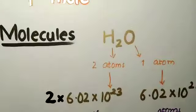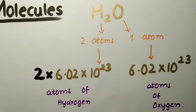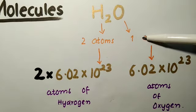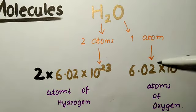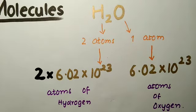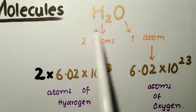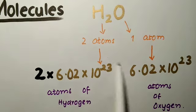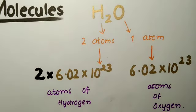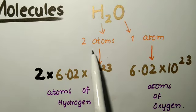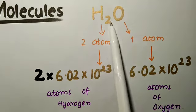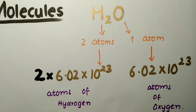If we talk about molecules, let's take H₂O as an example. In H₂O, oxygen has one atom, so it is equal to 6.02 × 10²³, which is 1 mole of oxygen. But hydrogen is H₂, meaning there are two atoms, so we multiply by two. This gives us 2 moles of hydrogen in H₂O.